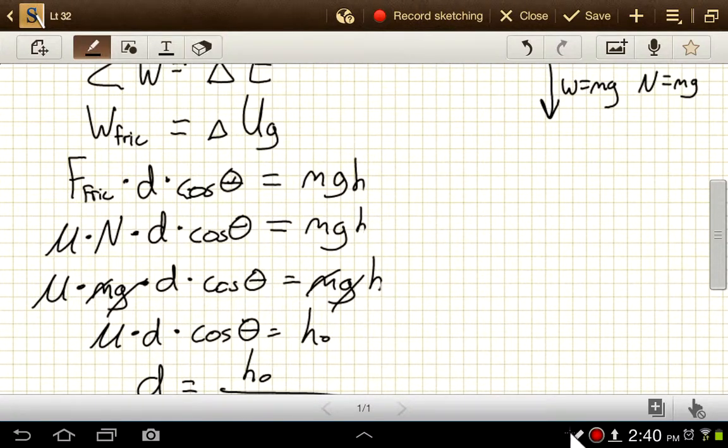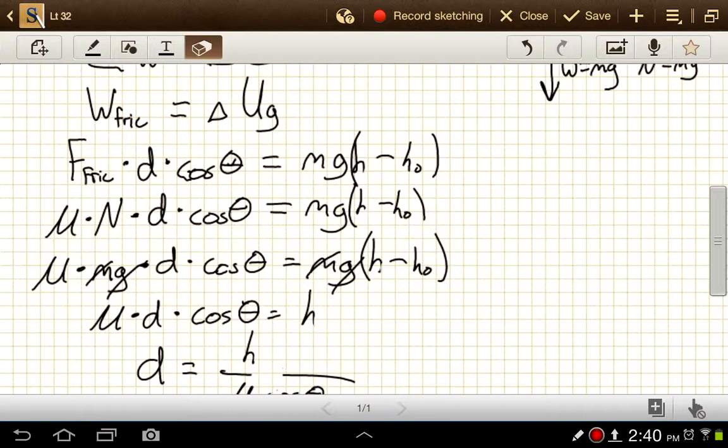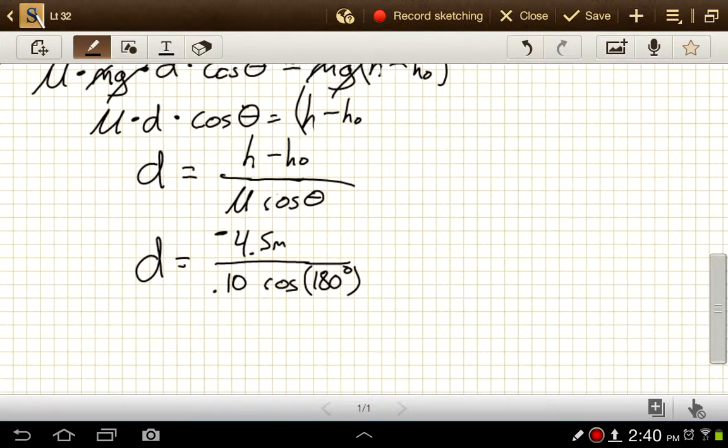So that actually should be, let me just make a correction here. So this should be height final minus height initial. So h minus h naught. Okay. So this one is really going to be 0 minus 4.5.